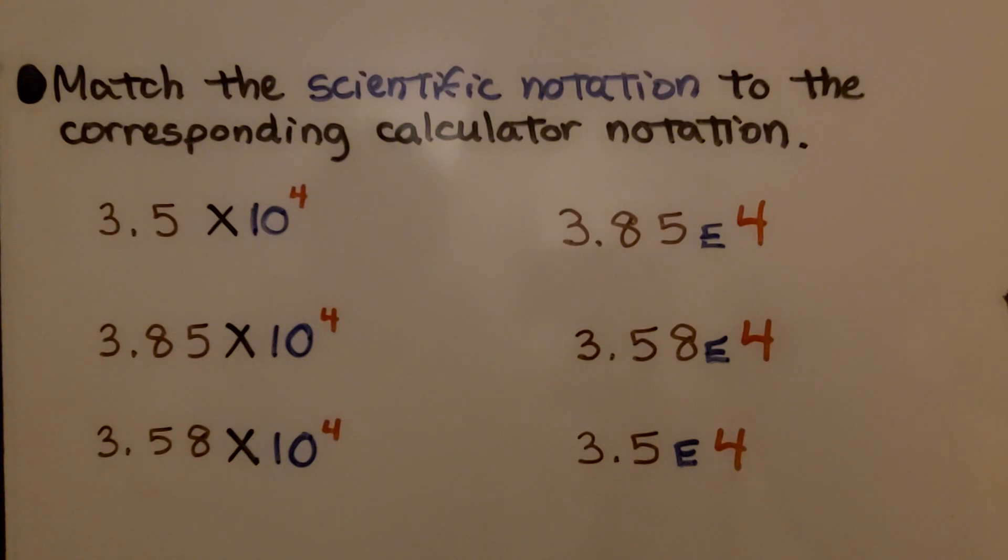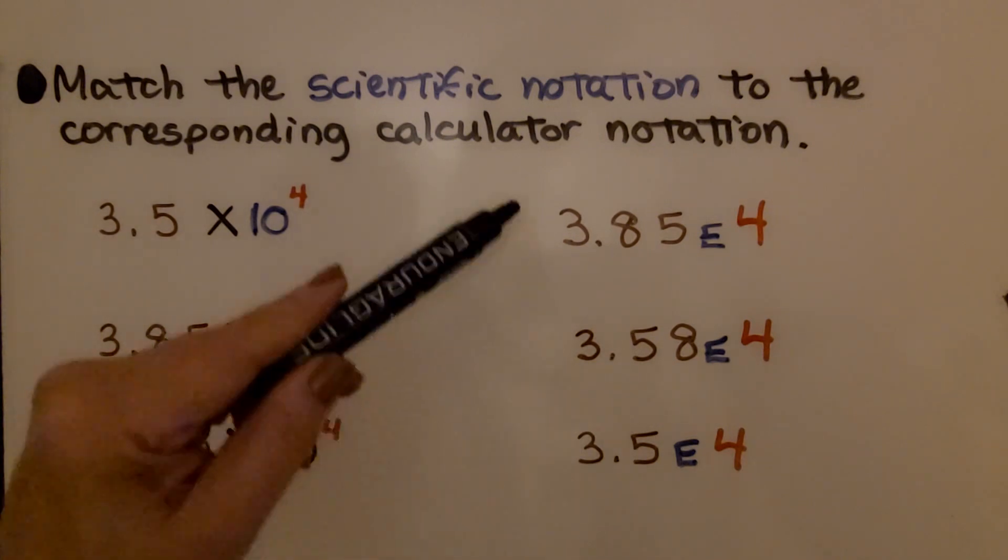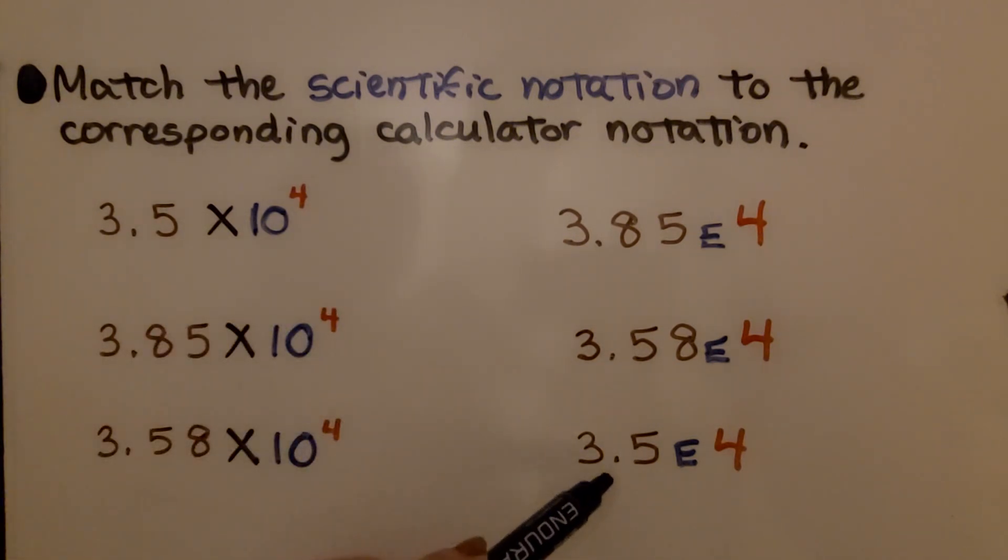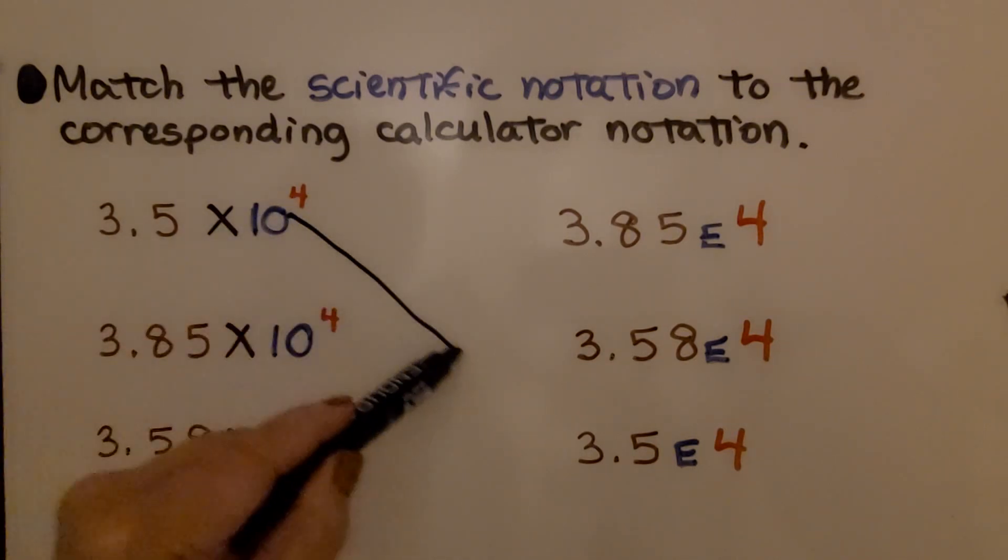Here it's telling us to match the scientific notation to the corresponding calculator notation. Our first one is 3.5 times 10 raised to the 4th power. We look over here, and we see 3.5E4. That's this one.